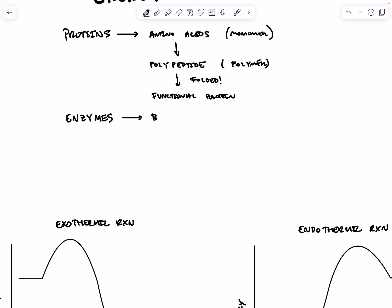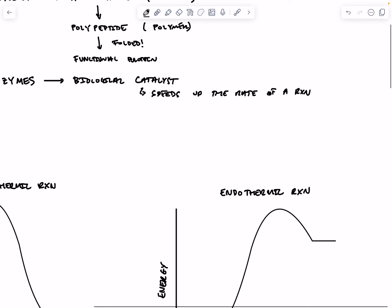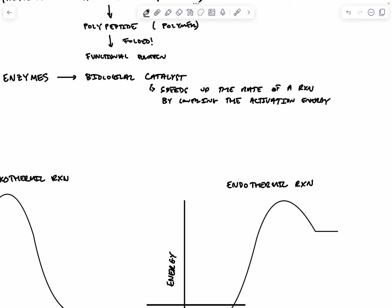What are enzymes? Enzymes are what we call biological catalysts. A catalyst is something that speeds up the rate of a reaction. It does this by lowering the activation energy. The activation energy is the energy required to get the reaction going.